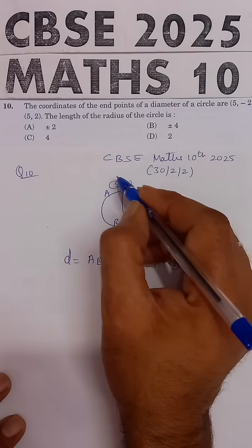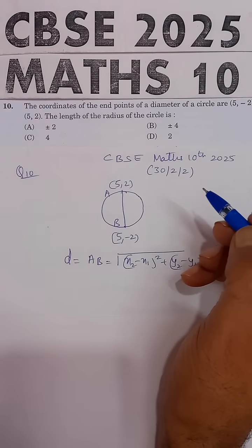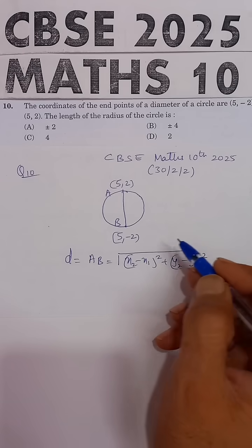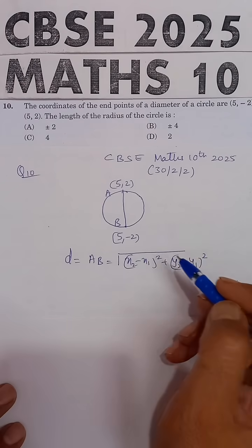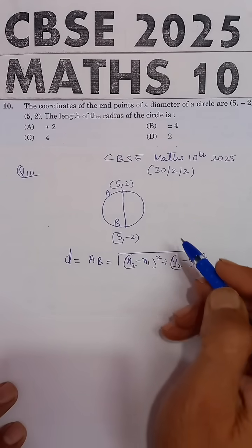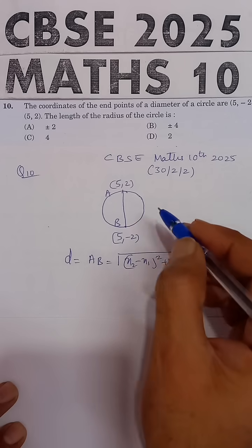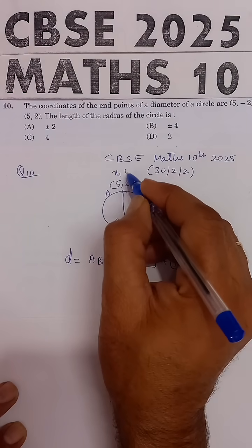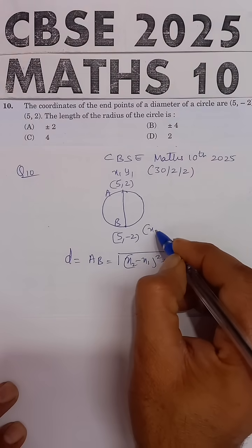Suppose we are assuming this as x1, y1 and this as x2, y2. We're naming one point as x1, y1 and the other point as x2, y2.